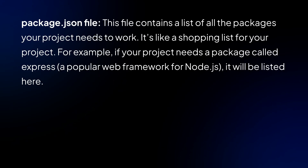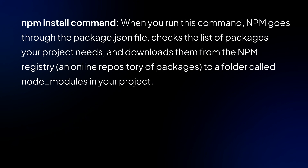When you run npm install, the things listed in package.json are what determine what will be installed in the node module. The npm install command makes npm go through the package.json file, check the list of packages your project needs, and download them from the npm registry — which is an online registry of packages — into a folder called node module in your project.